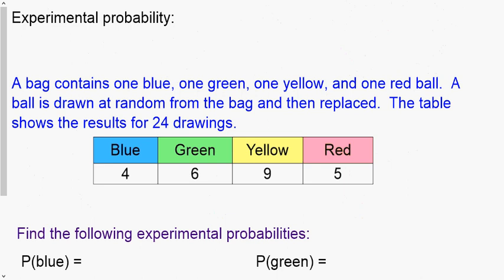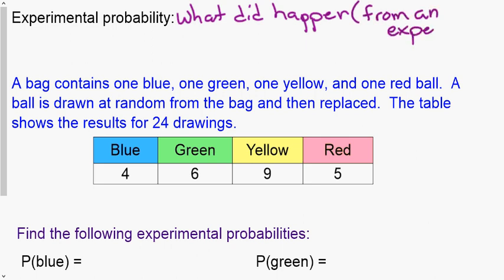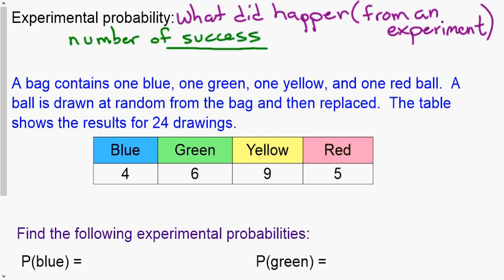Experimental probability is what happens after we have an experiment — what did happen. Theoretical is what should happen in theory; experimental is what did happen from an experiment. In math, an experiment can be as simple as flipping coins, drawing marbles, or rolling dice. The definition is: the number of successes over the total number of trials, where a trial is every time you draw, spin, flip, or perform the experiment.